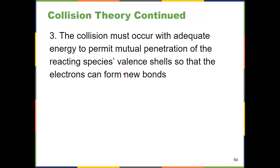Postulate one tells us a collision has to occur in the first place. Postulate two tells us it has to have the right orientation. Postulate three is telling us that not only must those first two things happen, but the collision has to happen with enough energy to allow the reaction to occur. And that reaction occurs between valence shells in order to break bonds and form new bonds. So it has to have sufficient energy is what postulate three is telling us.